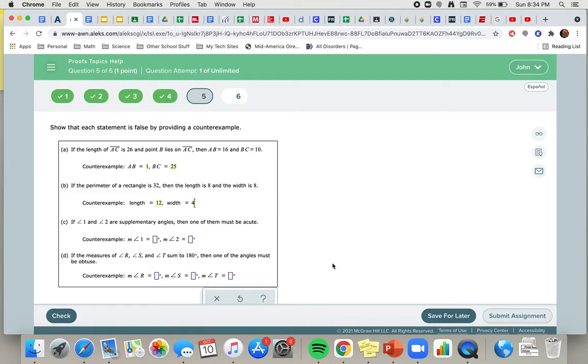Letter C: if angle 1 and angle 2 are supplementary angles, they add up to 180, then one of them must be acute. Again, we had this one earlier. We know that one case is where they are both right angles, in which case they're neither acute nor obtuse.